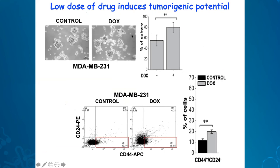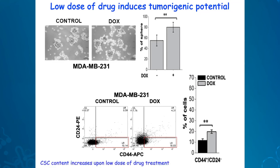We performed mammosphere formation assays and found that sphere formation ability goes up in dox-treated cells compared to controls, indicating a more tumorigenic context. We know breast cancer stem cells have CD44-positive and CD24-negative populations visible in FACS profiles. There is an increase in CD44-positive/CD24-negative cell population upon dox treatment, again indicating induced tumorigenic potential in a low-dose doxorubicin-treated condition.